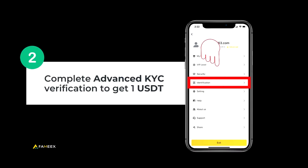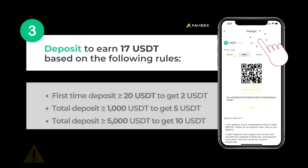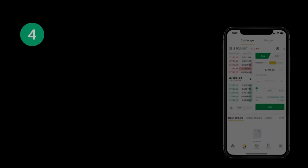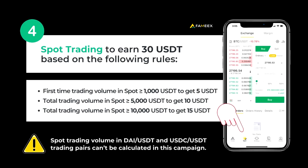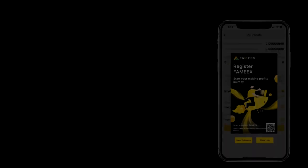Do you trade contracts? Then take the opportunity to get free 35 USDT. If your first contract transaction amount is 2000 USDT or more, you can receive 5 USDT. If your contract total transaction amount is 50,000 USDT or more, you can get another 10 USDT, and for a higher accumulated contract volume of 50,000 USDT or more, you can get another 20 USDT.